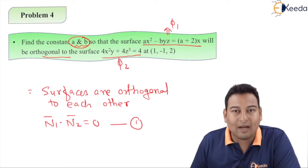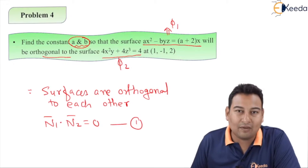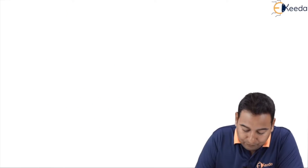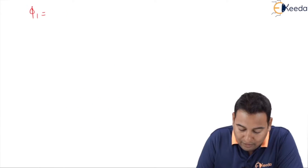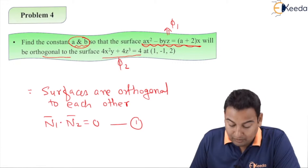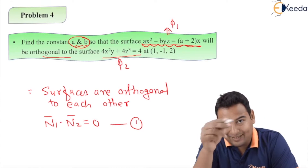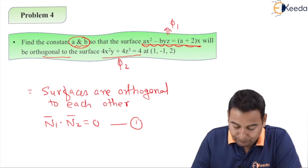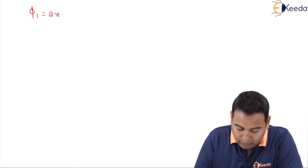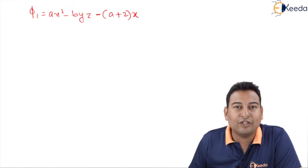Here we need to find n1 bar and n2 bar, which are normal to the surface. Let's find n1 bar. For that purpose we need phi one. This is phi one given in the problem: ax² minus byz. Taking everything to one side, phi one becomes ax² minus byz minus (a + 2x). Through this we're going to get n1 bar.